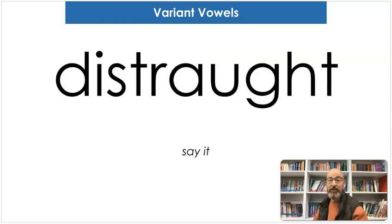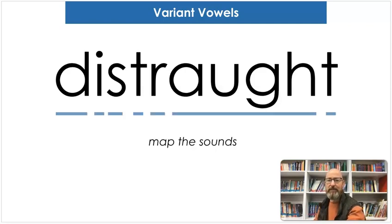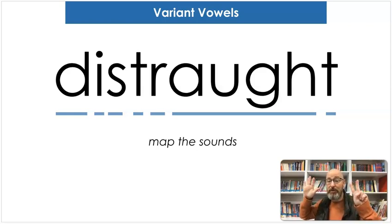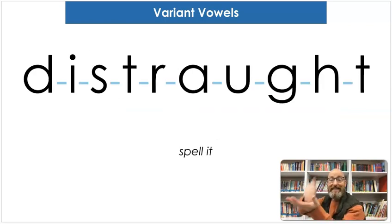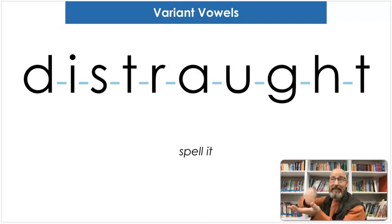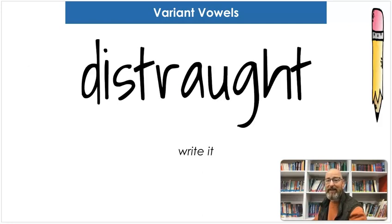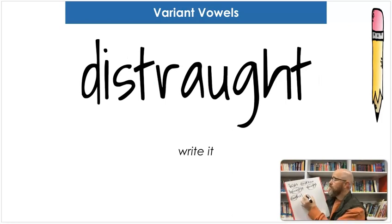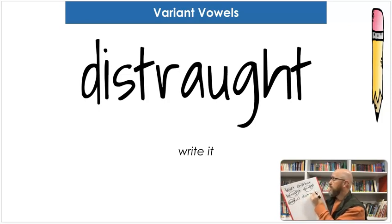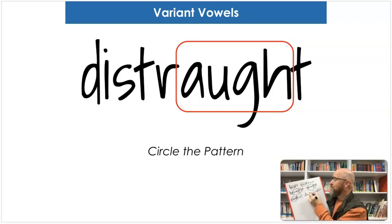Our next word is distraught. Say distraught. If you're distraught over something, it means that you're really sad and upset and bothered by it — you're distraught. Map the sounds: D-I-S-T-R-A-U-G-H-T. Distraught. And let's write it: D-I-S-T-R-A-U-G-H-T. What makes the "aw" sound? A-U-G-H. Let's circle it.